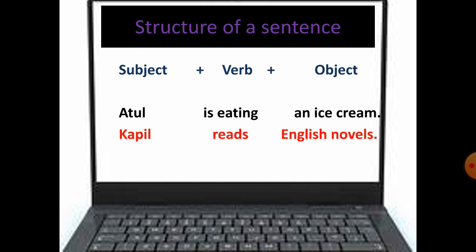Kapil reads English novels. Who is the doer? Who is doing it? Kapil. What is he doing? That is the verb. He reads, right? And what is our object? English novels. What does Kapil read? On what is the action happening? On English novels.